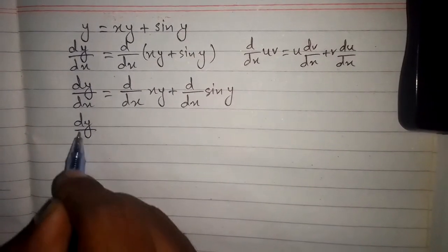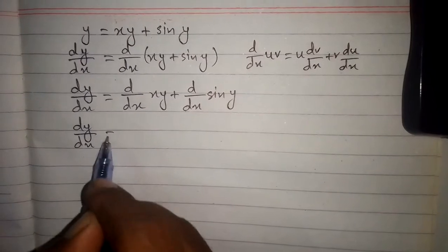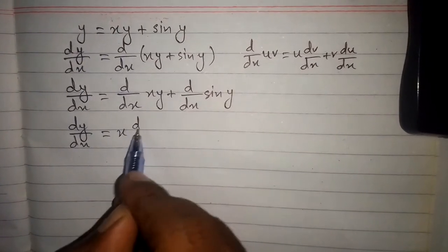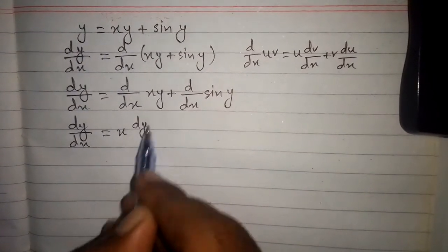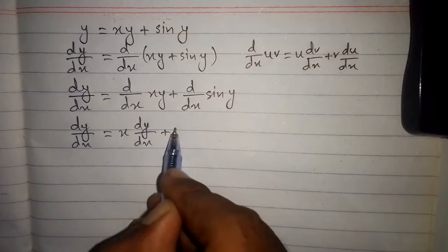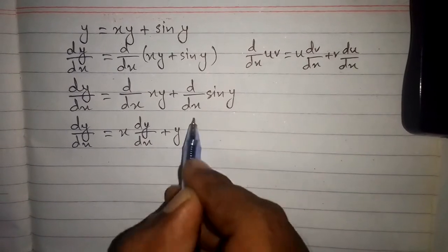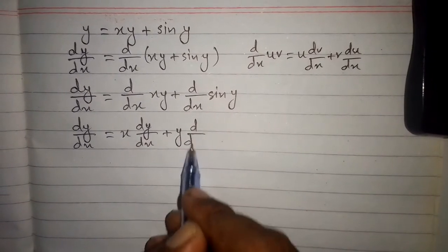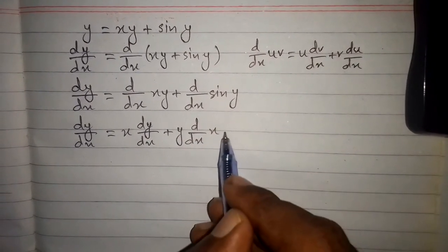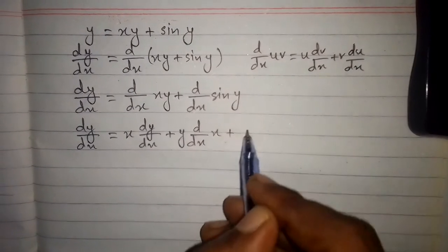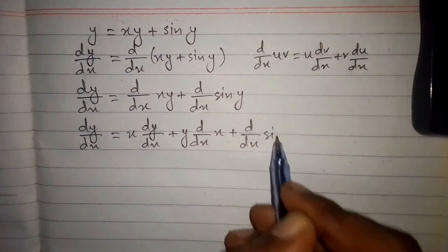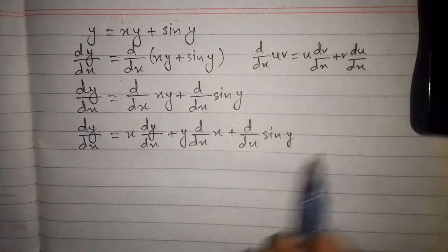So we have dy/dx is equal to x times dy/dx plus y times d/dx of x, plus d/dx of sin(y).